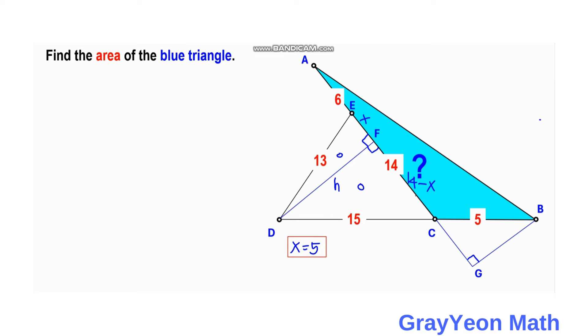Next, we get the value of H. We can use either of the two triangles, but we will use this smaller EFD. So H is equal to the square root of 13 squared minus X squared. But X is 5, so this gives us 13 times 13 is 169 minus 5 squared or 25.